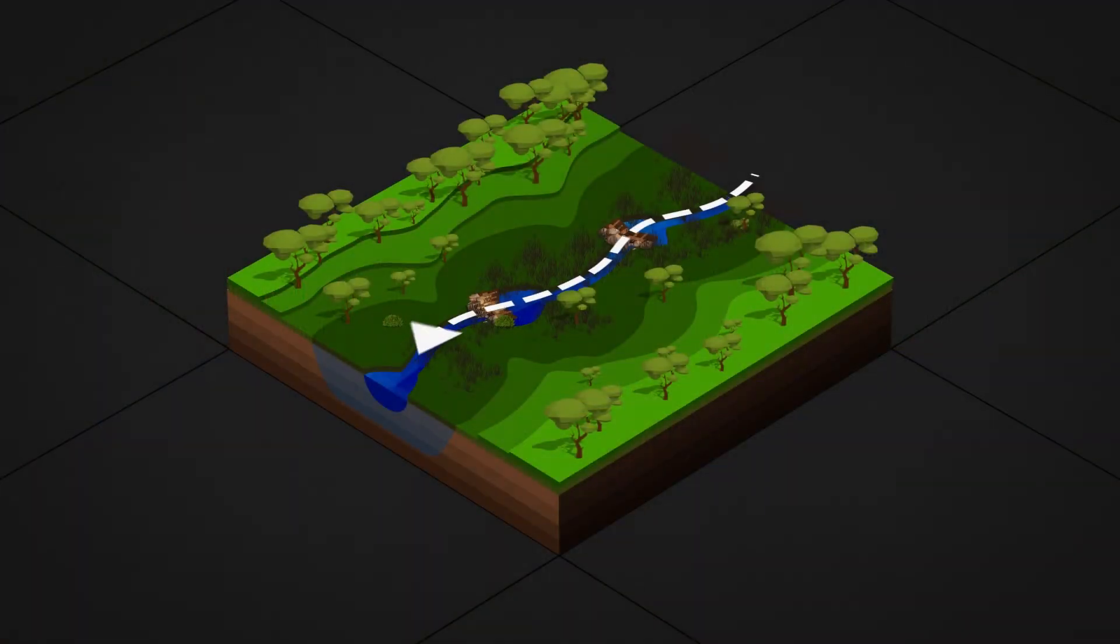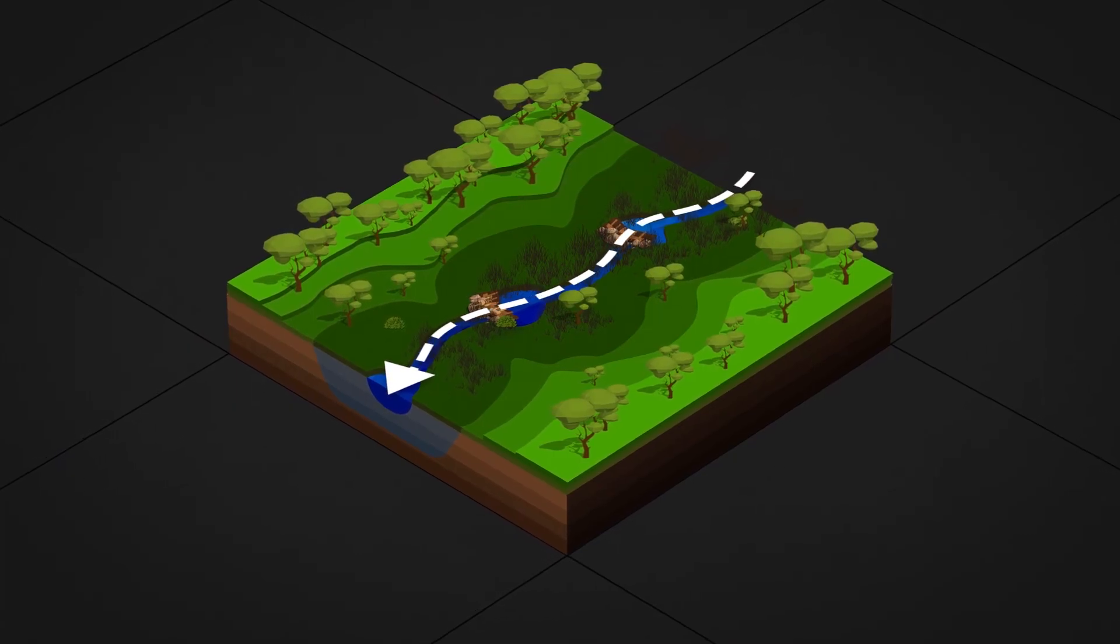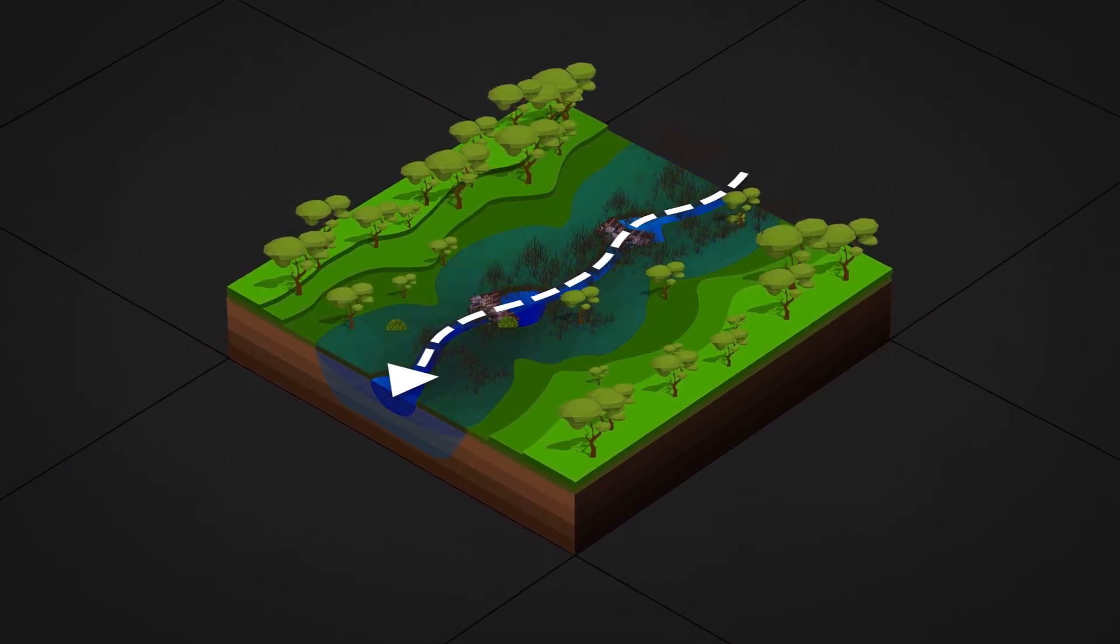Coupled with improved land management, these rehydrated landscapes provide more reliable stream flows and improved water quality.